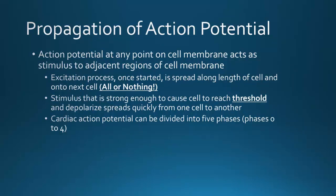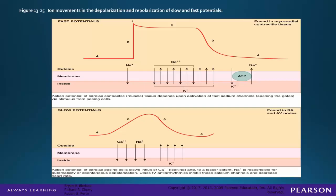The action potential of a typical myocardial cell can be divided into five phases: phase zero through phase four. On cardiac contractile tissue you have fast potentials. The slow potentials slow the influx of calcium and to a lesser extent sodium, which is responsible for automaticity or spontaneous depolarization. The fast potentials are found in the myocardial contractile tissue and are our current focus.